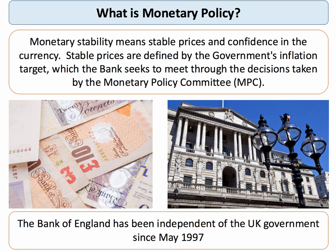Let's start by thinking about what monetary policy is. According to the Bank of England, monetary policy means stable prices and confidence in the nation's currency. The government has an inflation target of 2% — the rate of inflation of consumer prices — which it sets for the Bank of England. The bank seeks to meet this through monthly decisions taken by the nine members of the Monetary Policy Committee, which has been in place since the bank was made independent of government in May 1997.